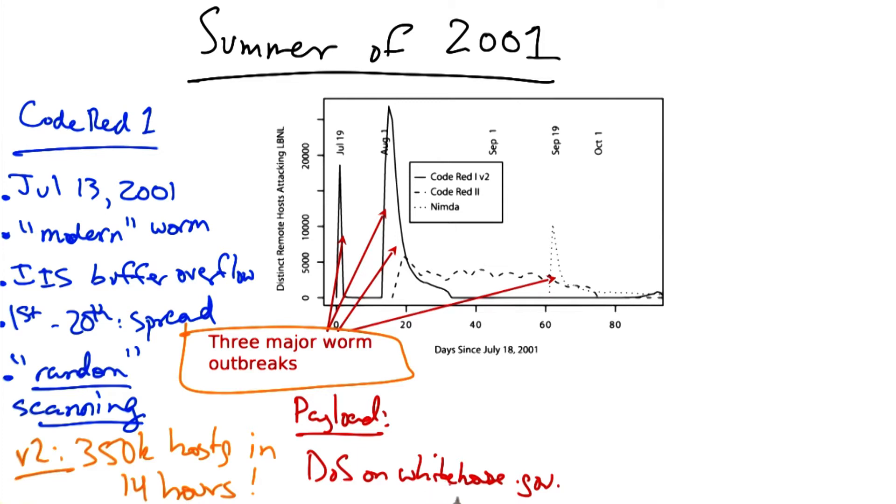Fortunately, in this case, the payload which launched the denial of service attack on whitehouse.gov actually was launched at a particular IP address, not at the domain name. So the operators of the website needed only to move the web server to a different IP address to defend against the denial of service attack. A better worm design would have been much more catastrophic.